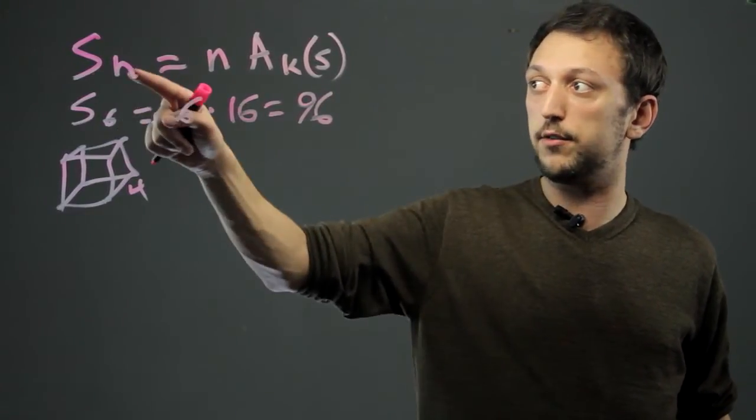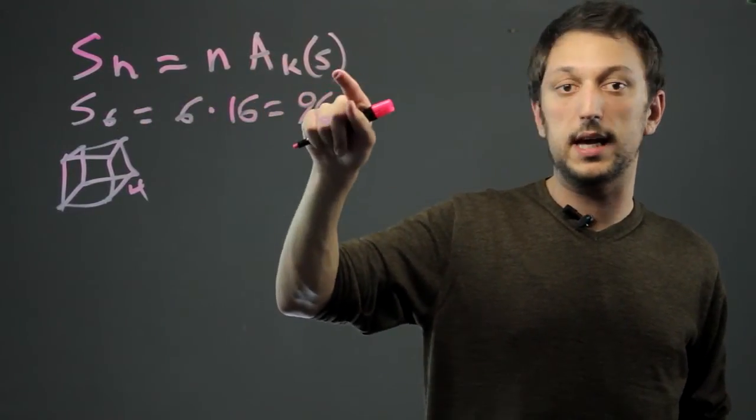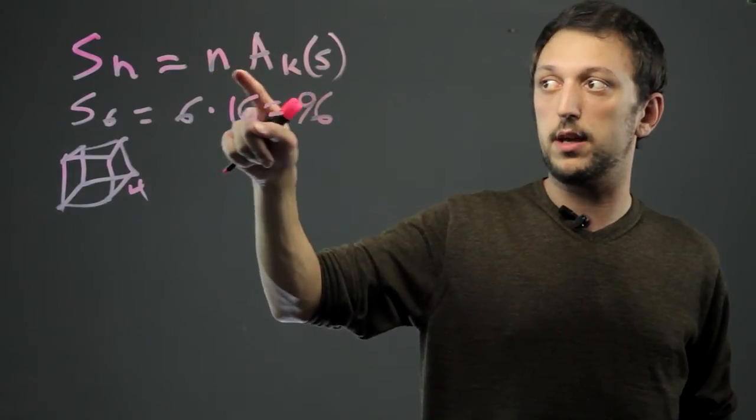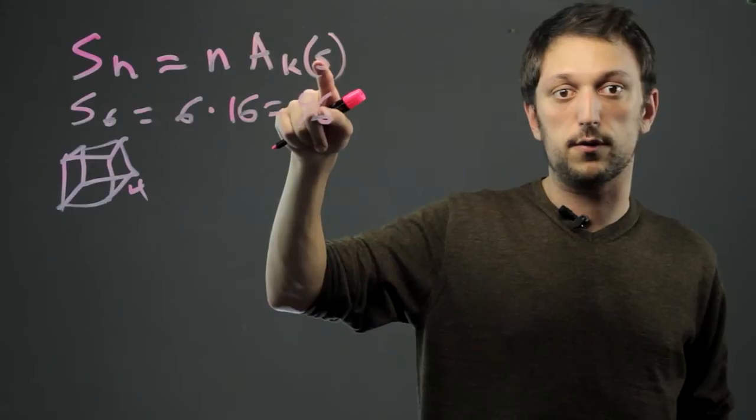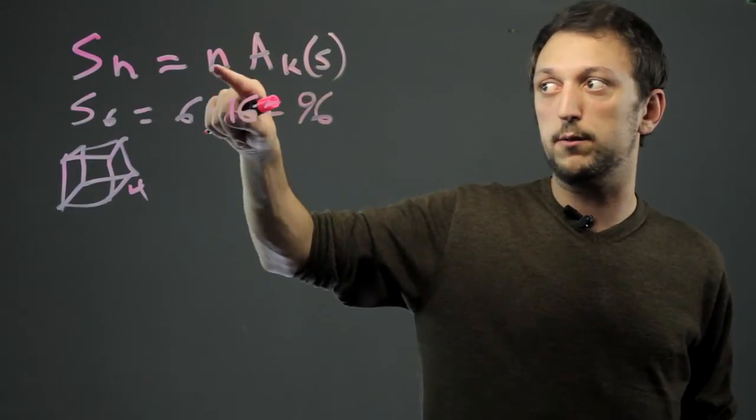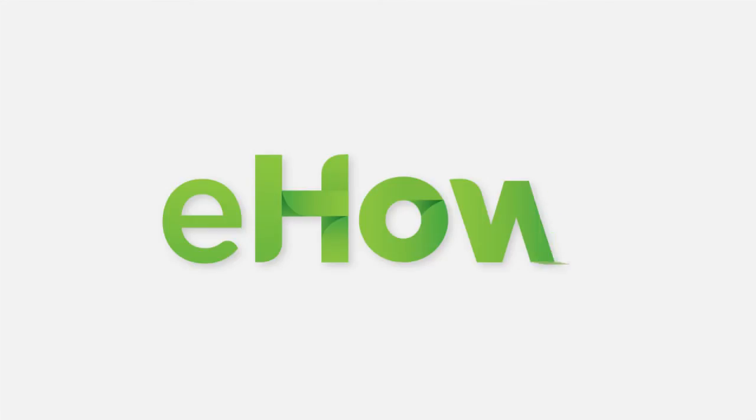So to wrap up, SN equals N times AKS. N is the number of faces. S would be the side length, and AKS represents the surface area of one face times the number of faces. All right.